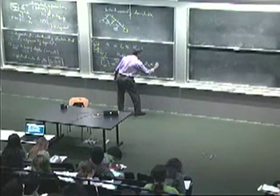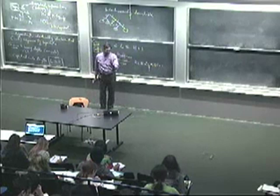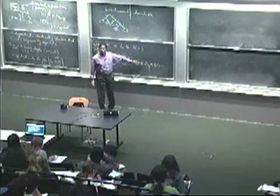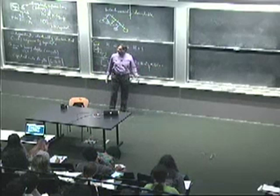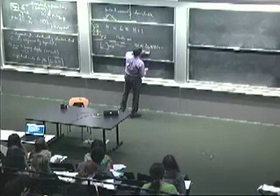You can do the Huffman construction again on pairs. L is still the expected length per symbol, but you're doing pairs, so the expected length for the pair is 2L. The lower bound is 2H, and the upper bound is 2H plus 1. So you've tightened the squeeze: from H plus 1 down to H plus 1/2. With triples, it becomes H plus 1/3; with k-tuples, H plus 1/k. Encoding larger and larger blocks squeezes the expected length down to essentially what the entropy bound tells you.